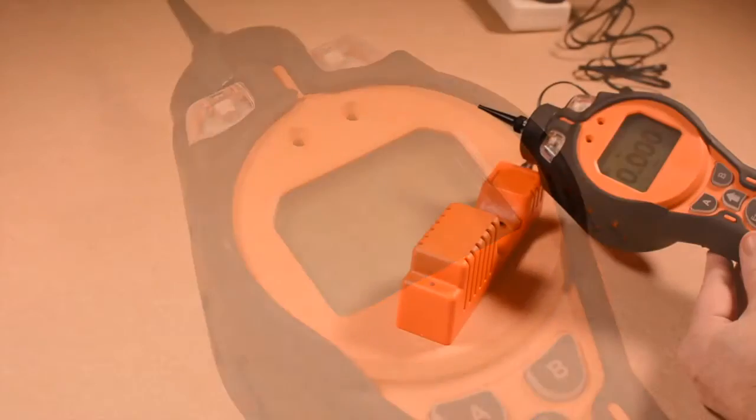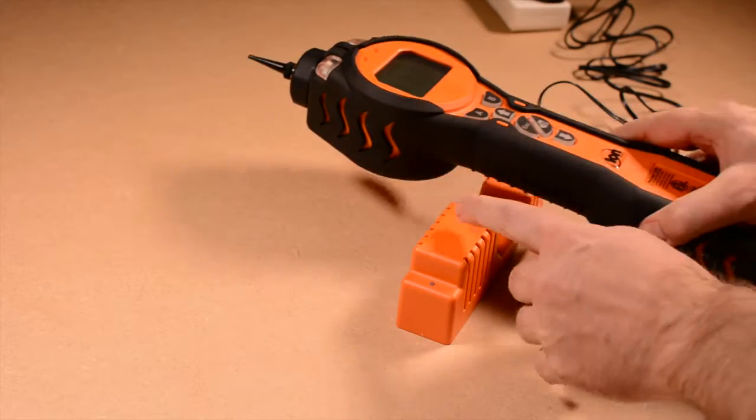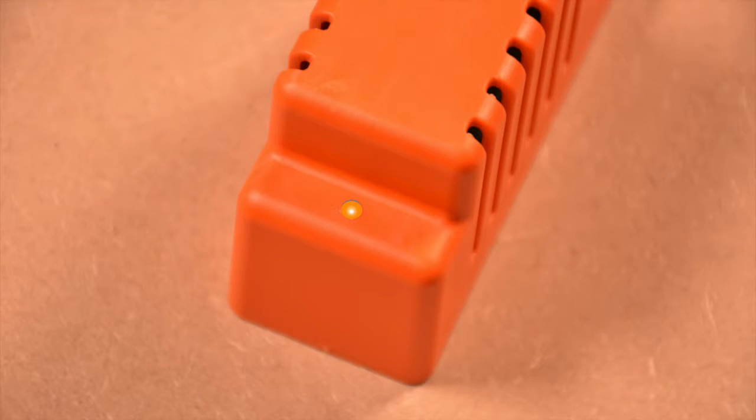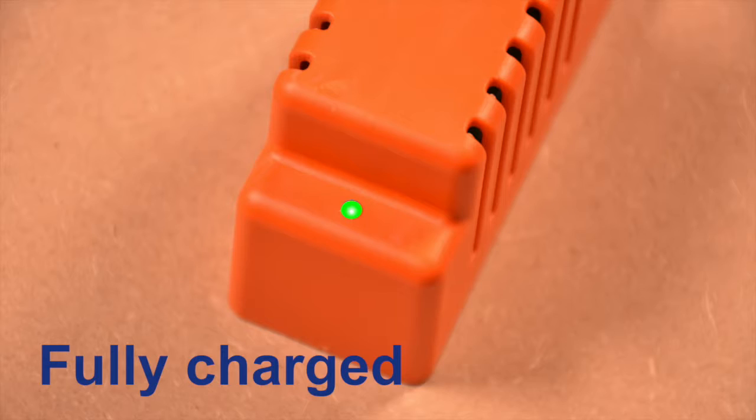To run the instrument while charging, switch it on before putting it on charge. When the instrument is fully charged, the LED will illuminate green. Your Tiger is fully charged and ready to use.